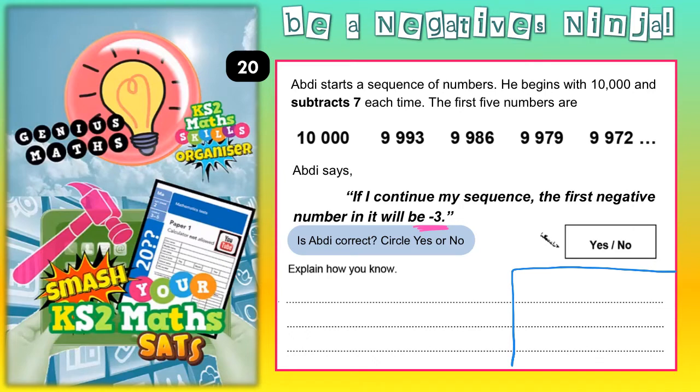So we could do 1,000 lots of 7 which is 7,000. So straight away if you were on 10,000 and you took away 7,000 that would take you down to 3,000. So now we're on 3,000.